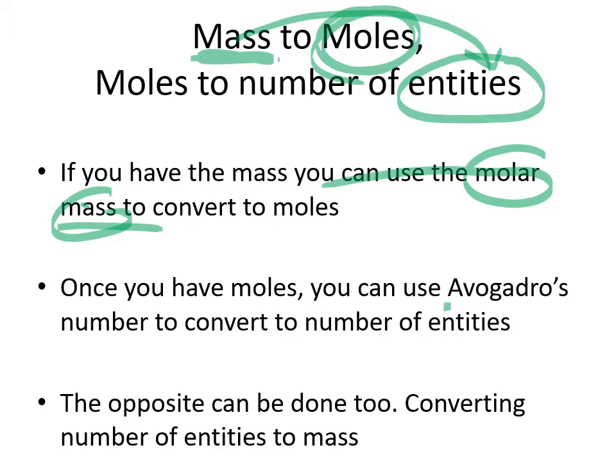Depending on the type of substance you're dealing with, those entities will be different things. For a molecular substance, it's made up of molecules, which are made up of atoms. For an ionic substance, the entities are formula units, made up of a particular ratio of ions. You can also do the reverse: start with a number of atoms and work backwards to find the mass.